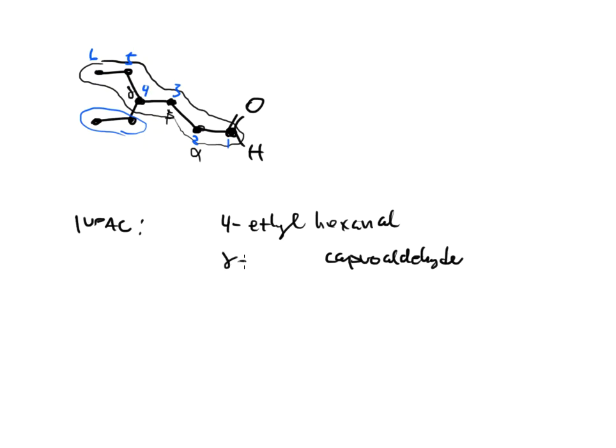So this is the alpha, this is the beta, and this is the gamma. So at the gamma position, we still have an ethyl group. So 4-ethyl hexanal is IUPAC. And gamma-ethyl-caproaldehyde is going to be the common name for that structure.